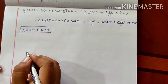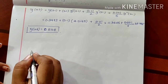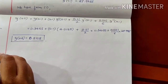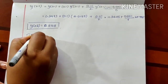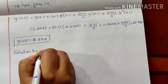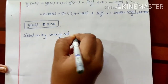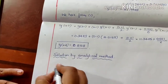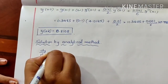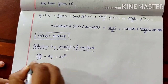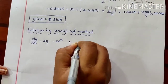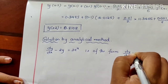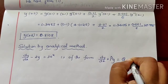So this is the required solution for y(0.2) using the Taylor series expansion. They also asked to find the solution by analytical method. The given differential equation is dy/dx minus 2y equal to 3 into e raised to x. It is of the form dy/dx plus p times y equal to q, where p is minus 2 and q is 3 into e raised to x. You have studied this type of example in the first semester.